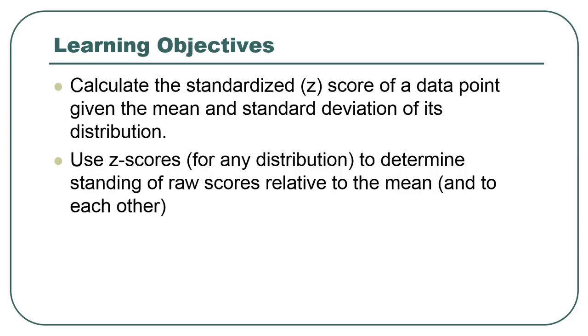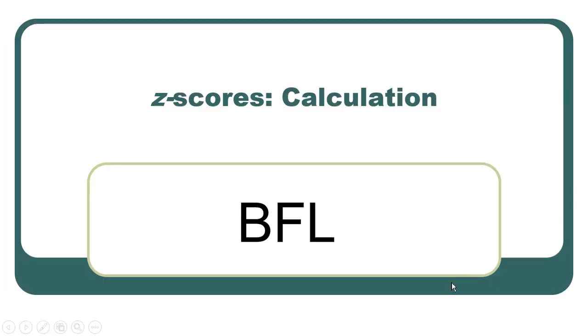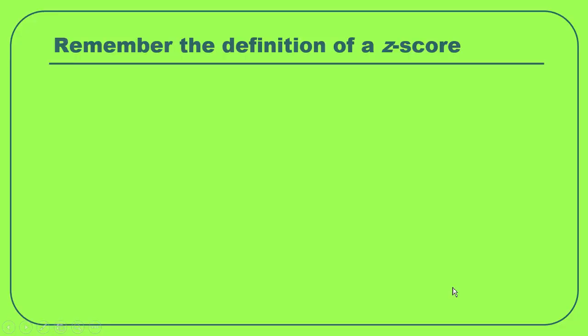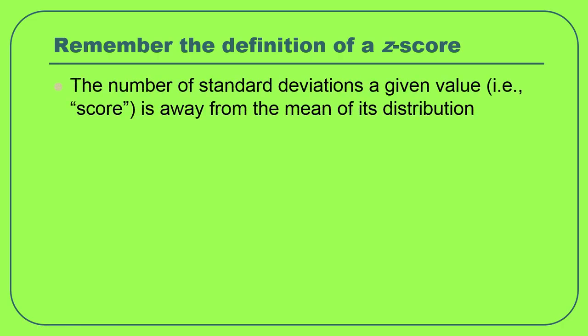We can also use z-scores to compare things to each other, and we'll see how to do that. Using brute force logic, let's go through the first few examples. The definition of a z-score is the number of standard deviations any given value is away from the mean of its distribution — deviations expressed in numbers of standard deviations. What's the deviation of this score from the mean? How many standard deviations is that? That's all this is.